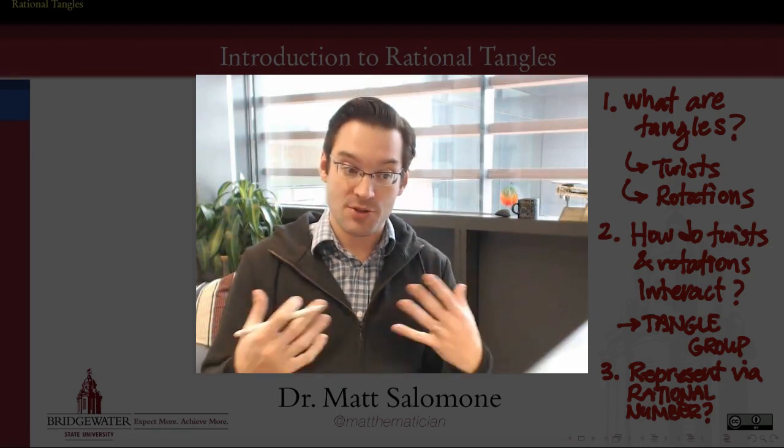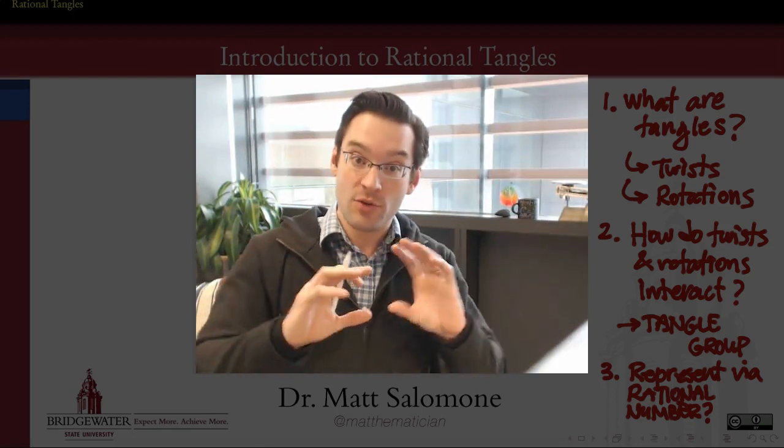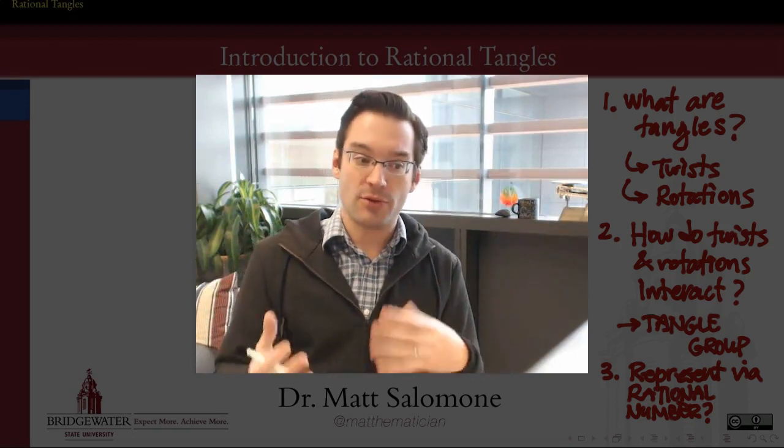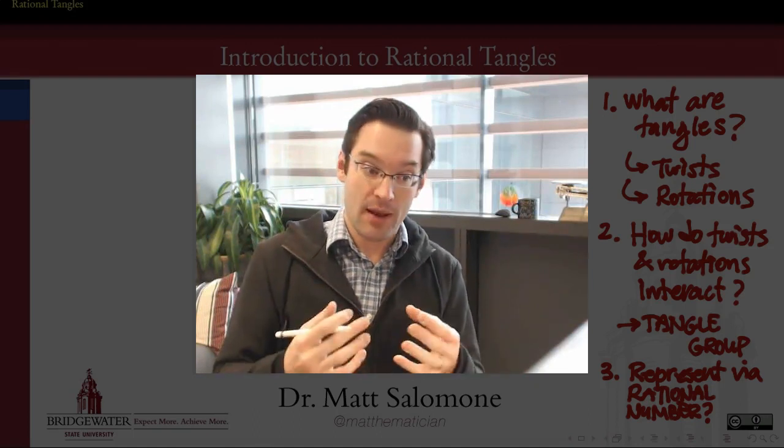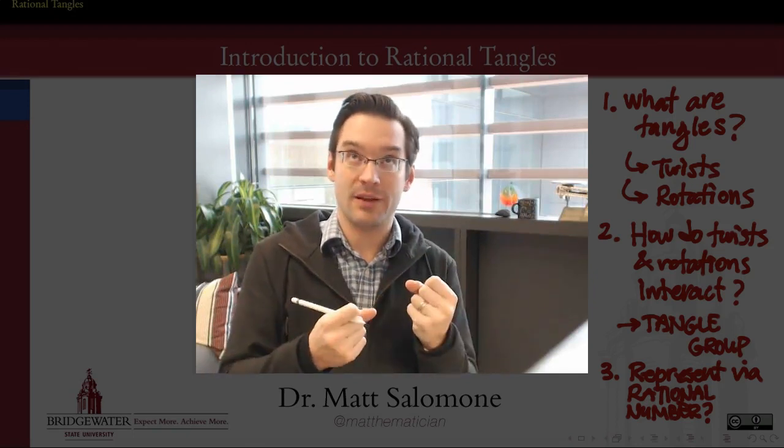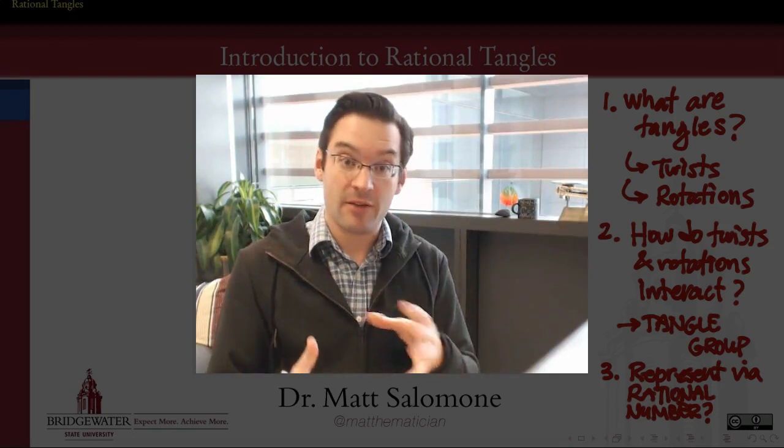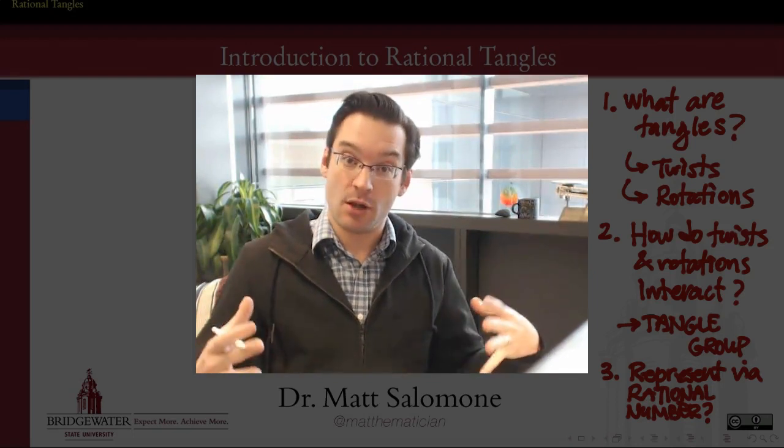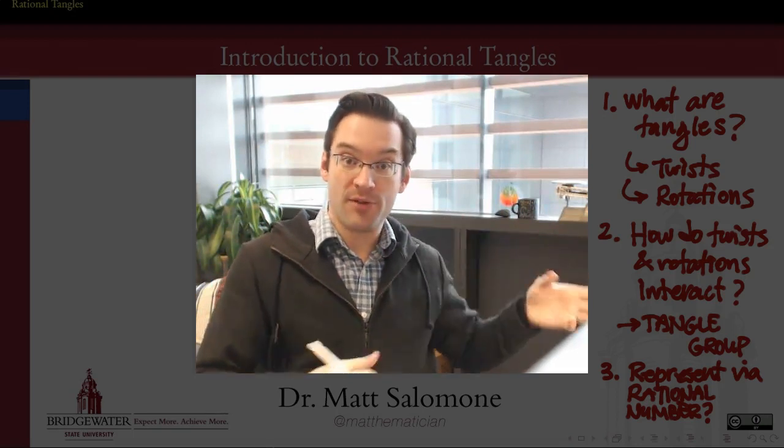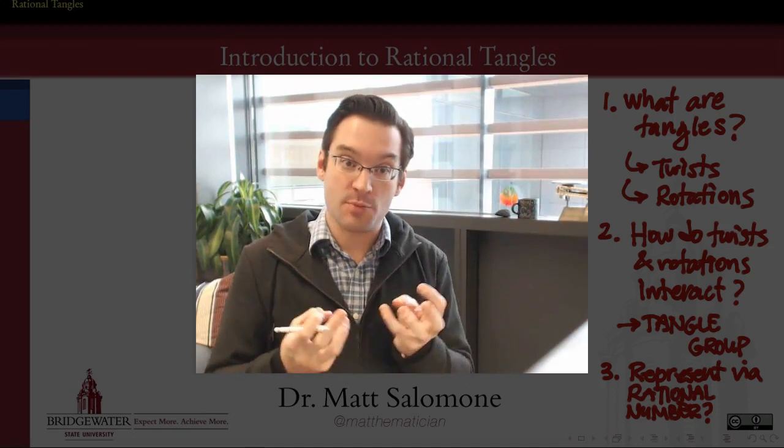So in this video, we're going to first talk about what are rational tangles. In particular, we're going to focus on how tangles are built out of two types of operations, twists and rotations. Second, we're going to think about how twists and rotations relate and interact one with another. And what we'll get out of that study of interactions is an abstract algebraic object called a group. We're going to call it the tangle group. It's going to be the group of all things that we can do to add more twists or to add rotations to make a tangle more or less complicated. So that's going to give us our first foothold into algebra per se.